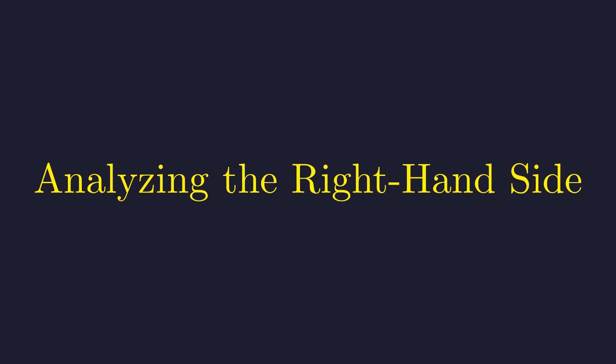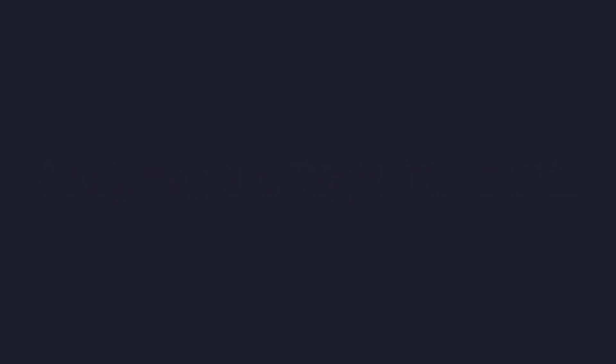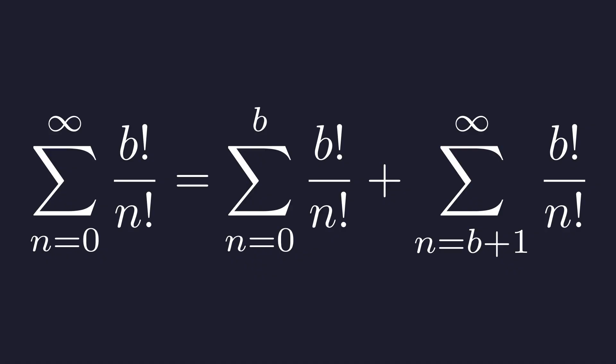Now for the right-hand side. This is where the contradiction will be revealed. We'll split the series into two parts. We distribute B factorial into the sum, then split the series into two groups, the terms up to N equals B, and all terms where N is greater than B.